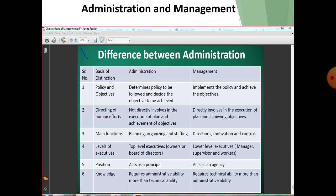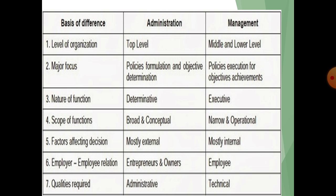Administration is the top-level management — the owner of the organization — while management is the low-level management, including workers, employees, and supervisors. Key difference points include: policy and objective, direction of human effort, main function, level of executive, position, and knowledge required. Further differences include: level of organization (top vs. middle), nature of function, scope of function (broad vs. narrow/operational), factors affecting decisions, employee quality, and these are totally different.